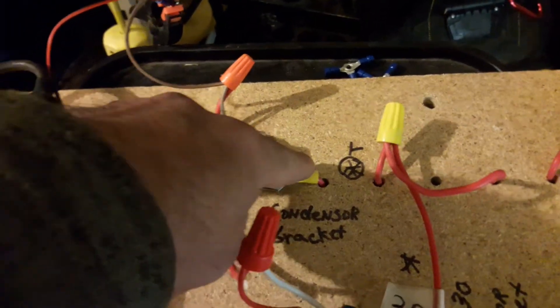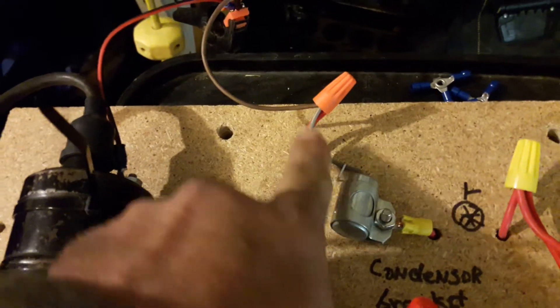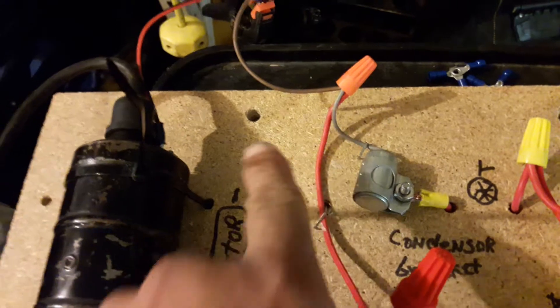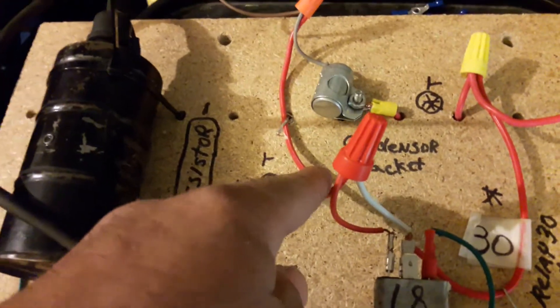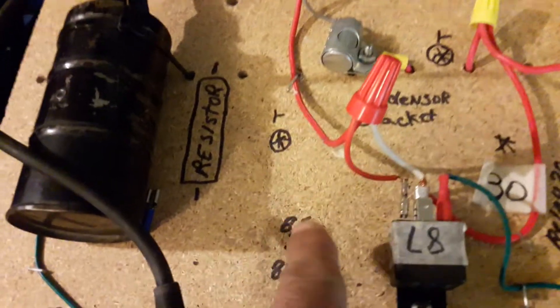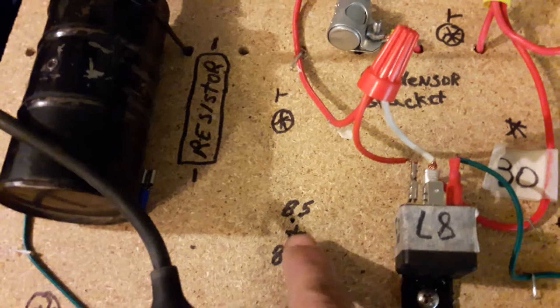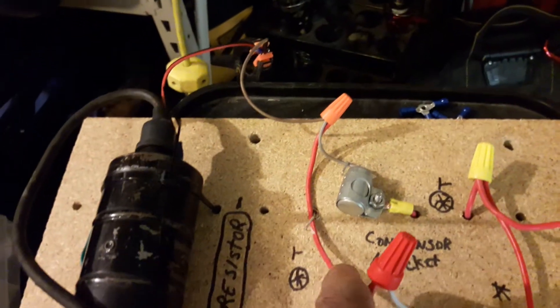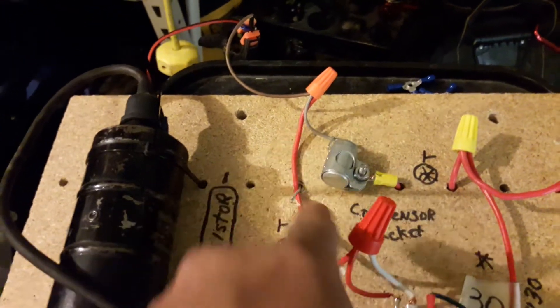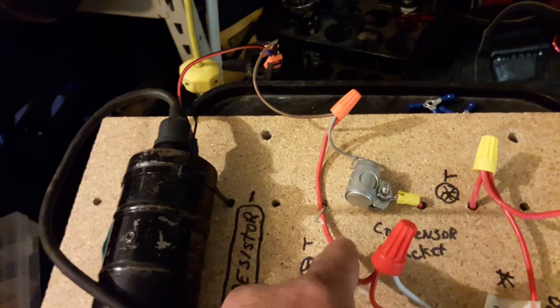Then we're going to go to the top of the condenser. You're going to come off that and go back to the front of your vehicle, back to the relay. You're going to have two spades that are tied together, which is 85 and 87a. You can see they're coming out and tying onto this wire coming off the condenser. Again, you're tying spades 85 and 87a together to this particular wire that goes towards the front of the vehicle up underneath the dash.